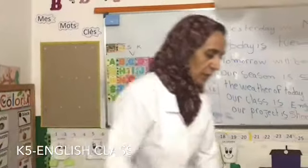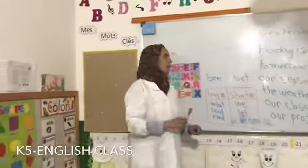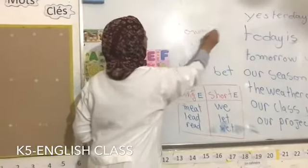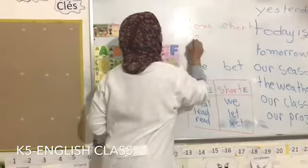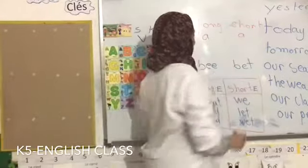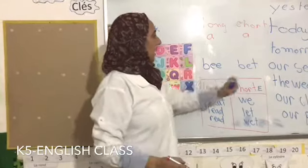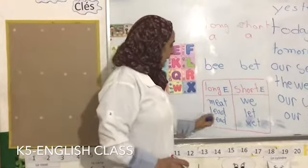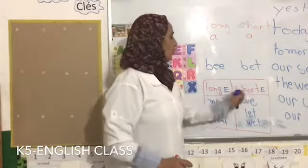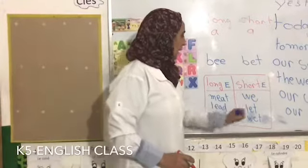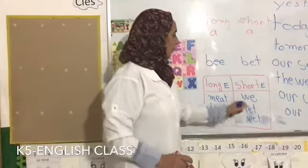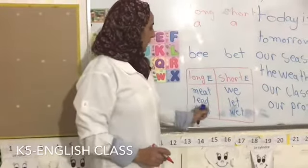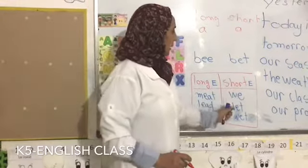For the class I'm going to work with you on Friday, last time we solved long and short A. This time we're going to see the long E and the short E. Long E: meet, lead, read. The short one: wet, let, web. So long E — meet, lead, read. Short one — wet, let, web.